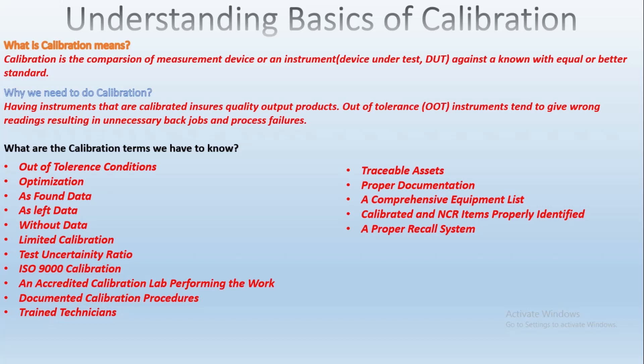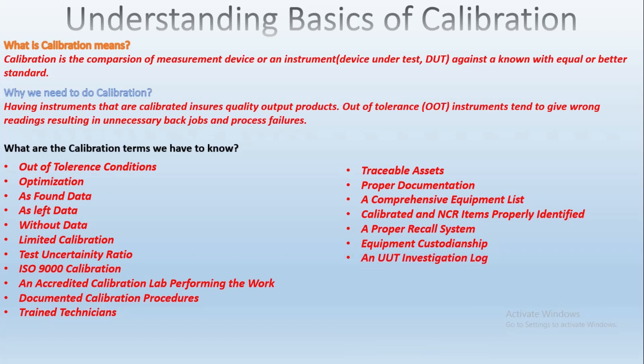A proper recall system should be established with time frames for recall notification, an escalation procedure, and provisions for due date extension. Equipment custodianship — responsibilities for ensuring the equipment is returned to the calibration lab — should be assigned and delegated. Finally, an OOT investigation log: any instrument found out of tolerance requires an investigation to determine the impact on manufacturing records, and reports need to be maintained.